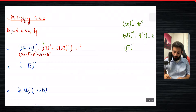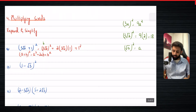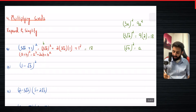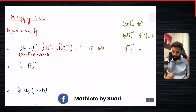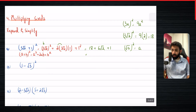Remember: whenever you have √a and you square it, you just have a left at the end. So (3√2)² becomes 18. Then 2 × 3 = 6, and the √2 remains, giving 6√2. Plus 1² which is 1.